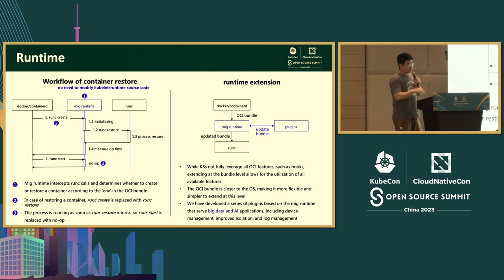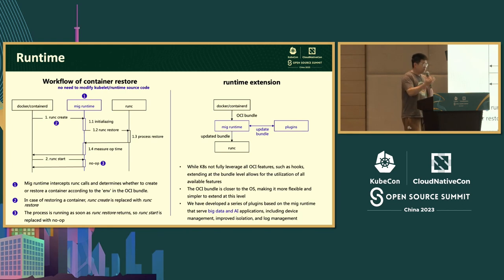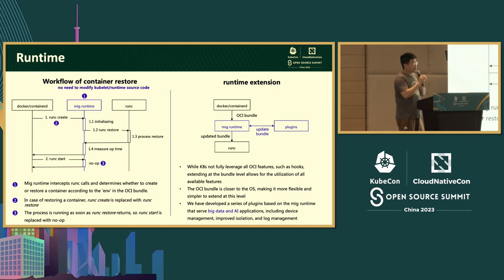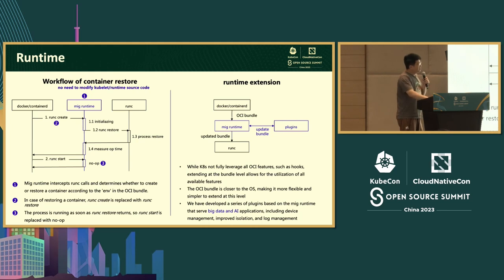We found that this approach of processing the OCI Bundle at a lower level is very suitable for business extensions. The OCI Bundle provides rich extension capabilities — not just custom Namespace and CGroup configurations, but also many hooks. K8S only uses a small portion of these. By providing extensions at this layer and allowing modification of the OCI Bundle based on business needs, we gain great flexibility. We implemented a series of plugins on our Runtime for big data and AI application extensions.